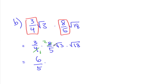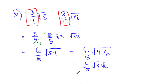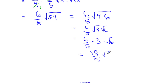Now I can multiply my surds together, and 3 times 18 is 54. So now we need to know our list of square numbers. If I think about this, I know from my times tables that 9 times 6 equals 54, and 9 is on that list. So this is root 9 times root 6, which gives me 3 root 6. And so I now have 6 over 5 times 3 root 6, which is 18 over 5 square root 6 as my answer.